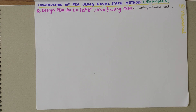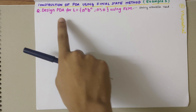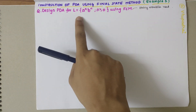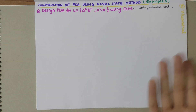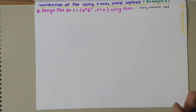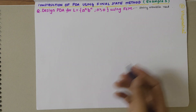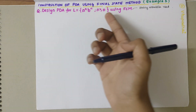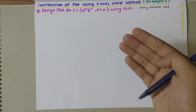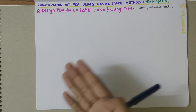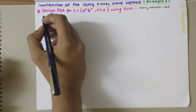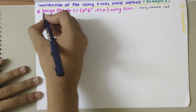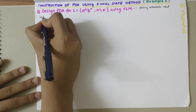In this video we'll be looking into construction of a PDA using the final state method. The first example is to design a PDA for the language a to the power n, b to the power n, where n is greater than or equal to zero, using FSM. In FSM, we should mainly remember that strings would be used, so depending on the language, elements would be popped or pushed onto the stack.